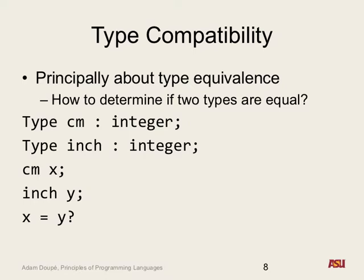From a programmer's perspective, we do not want this to just happen — one inch is not the same thing as one centimeter, even though to the underlying system it's represented as integers. To the underlying system everything's ones and zeros, so then we don't need a type system. This helps us not shoot ourselves in the foot, because we can define a new type as centimeter, and we know that anytime we assign it, we're only assigning centimeters to centimeters, as opposed to accidentally assigning inches or feet or whatever other kind of value.